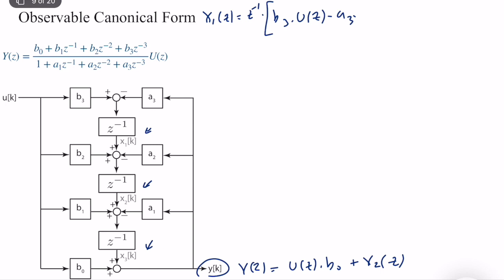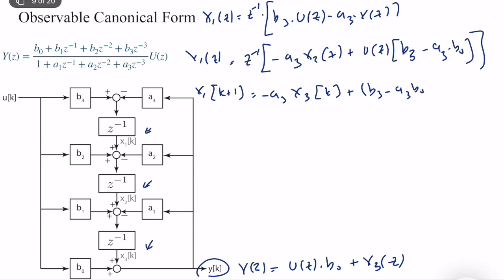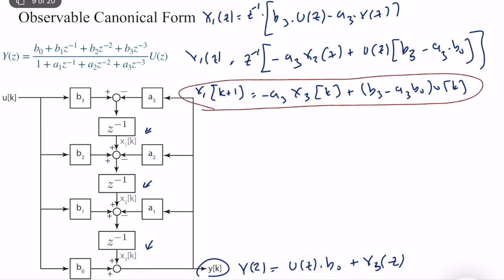So if I organize it here, this is y of z. x1 of z is equal to z to the power minus 1 times y of z minus a3 times x3 of z plus u of z times b3 minus a3 times b0. So what we can do is convert it into difference equation form which we can use for the state-space representation, which gives us x1(k+1) is equal to minus a3 x3(k) plus (b3 minus a3*b0) u(k). So we computed our first equation.